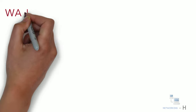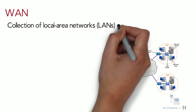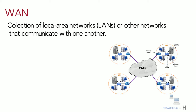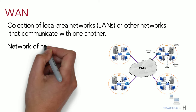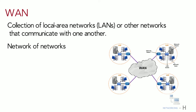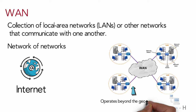In its simplest form, a WAN or Wide Area Network is a collection of local area networks, or LANs, or other networks that communicate with one another. WAN is essentially a network of networks, with the internet being the world's largest WAN. A WAN operates beyond the geographical scope of a LAN.